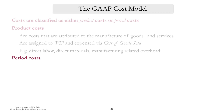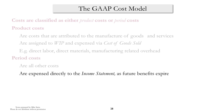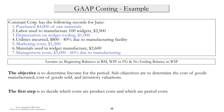On the other hand, period costs are pretty much all other costs. These costs get expensed directly to the income statement as future benefits expire. Here's an example — we have a list of various types of costs for a company, and we're going to take a look at these costs and see how we would classify them, either as product costs or period costs.